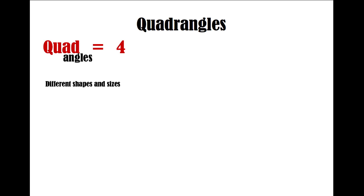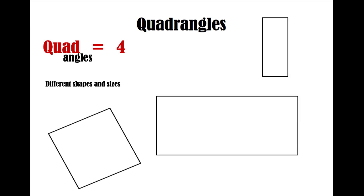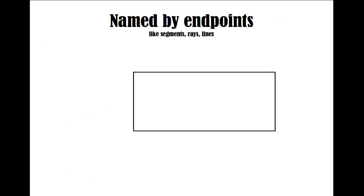Quadrangles can come in all different shapes and sizes, just like triangles. Quadrangles are also named by their endpoints, but there's a little bit of a trick to naming quadrangles. Here, we have a quadrangle with endpoints A, B, C, and D.